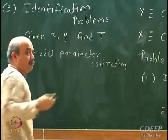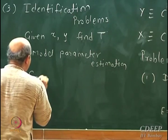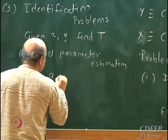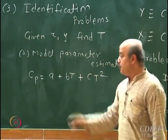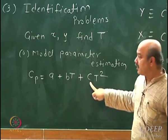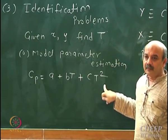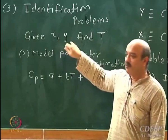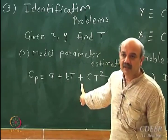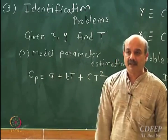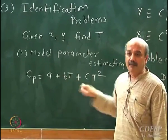Suppose for some particular material you want to find out Cp as a function of temperature. You have the form A + BT + CT². You do not know A, B, C. You have been given values of Cp and values of temperature. So you have been given X (temperature) and Y (which is Cp). What you want to find out is the correlation — the operator. Finding the operator in this case reduces to finding out A, B, and C.